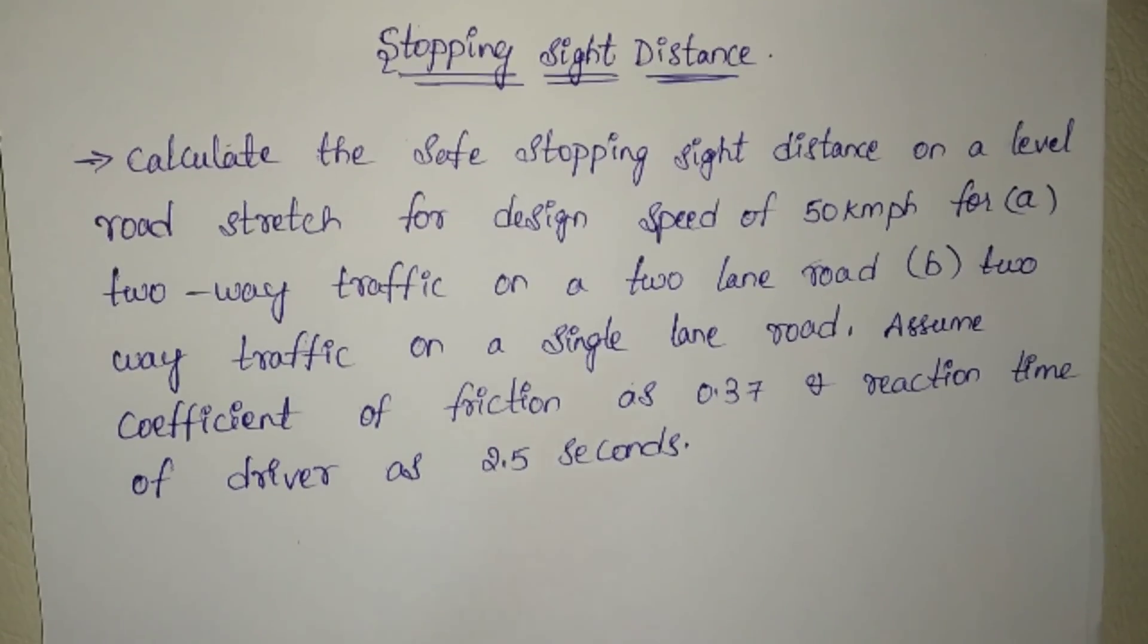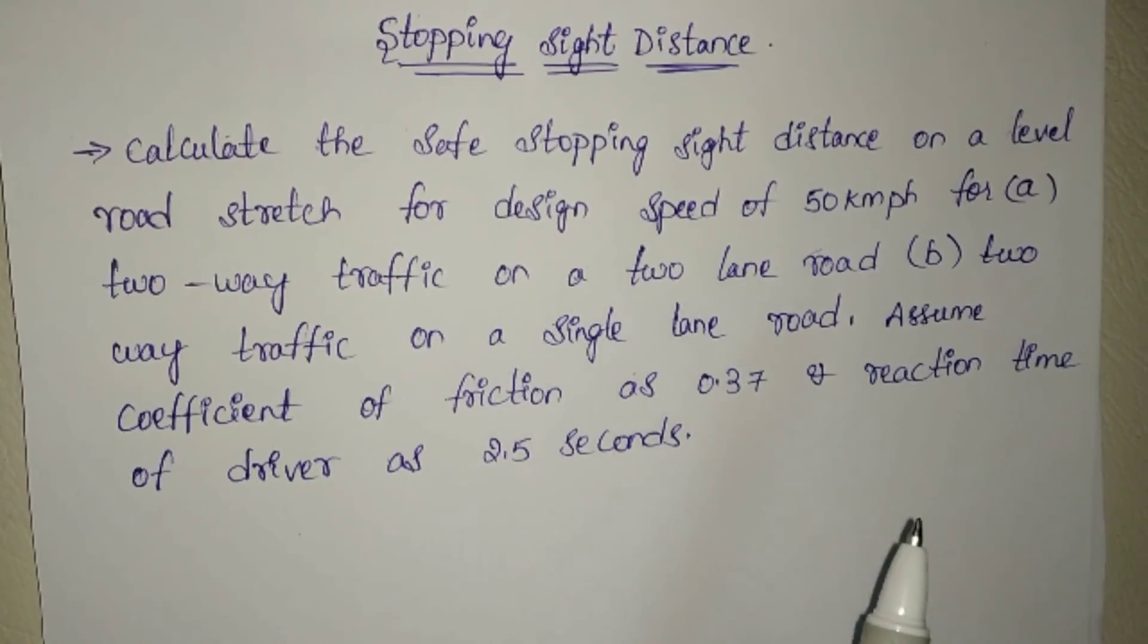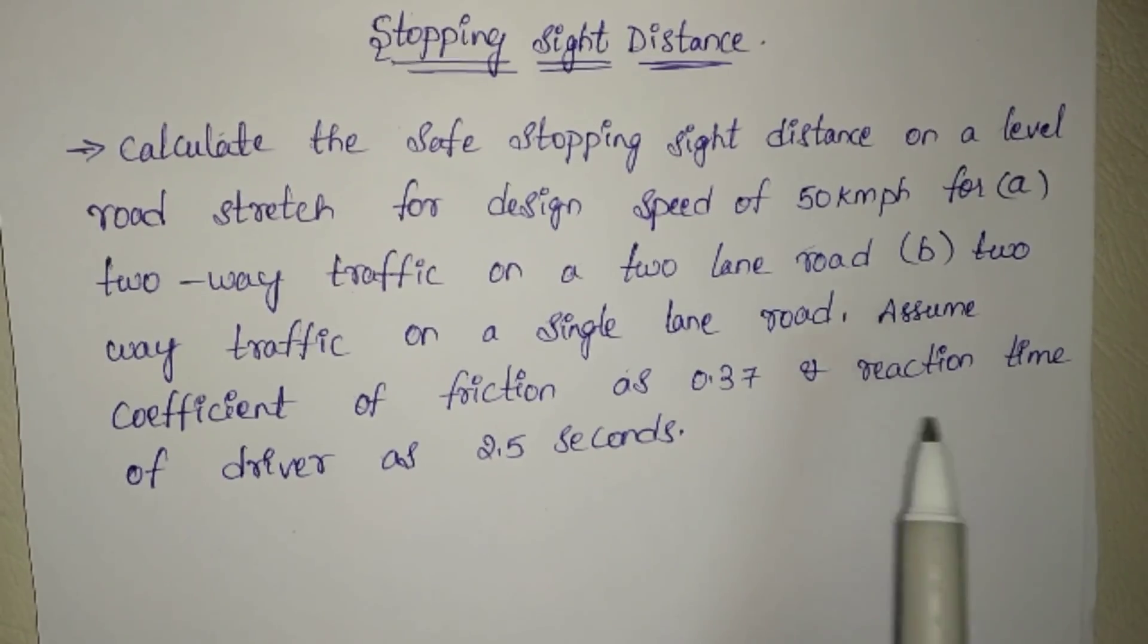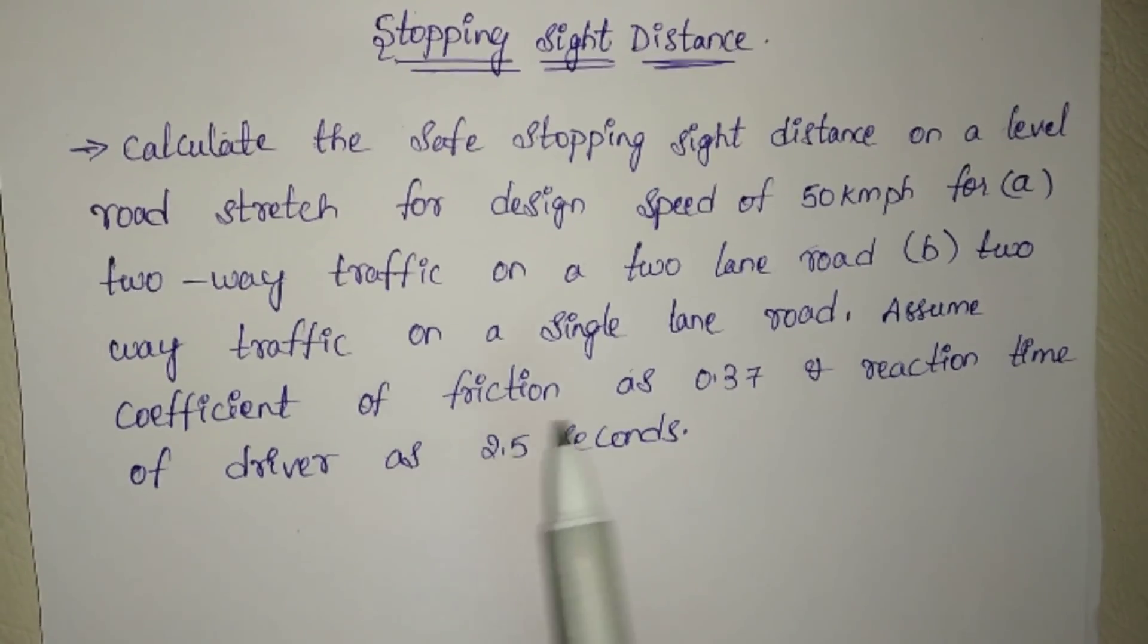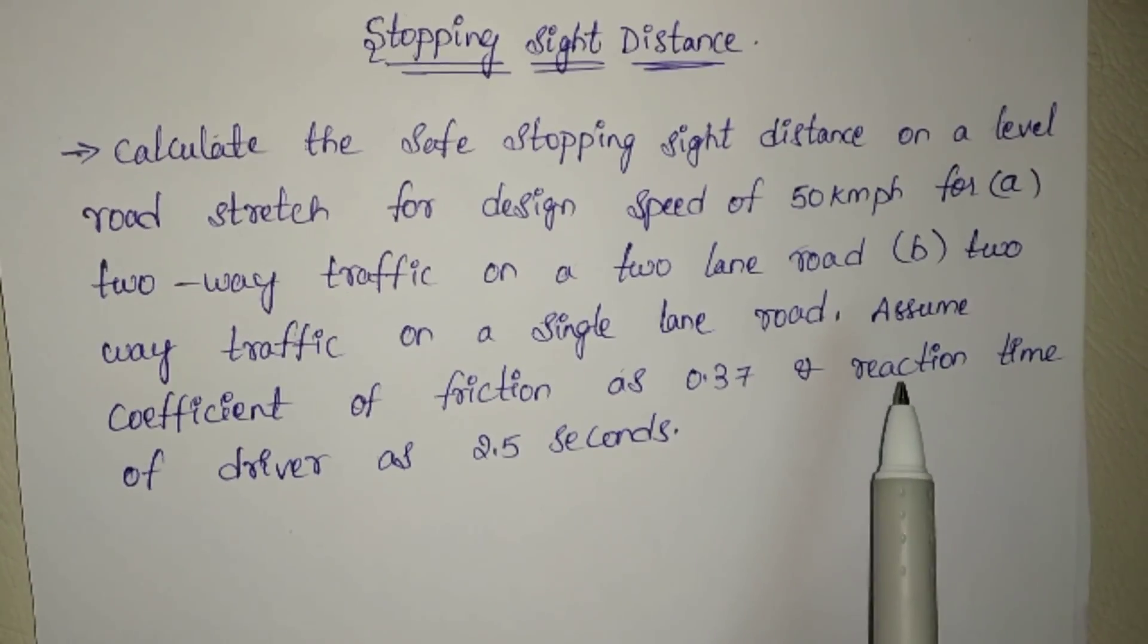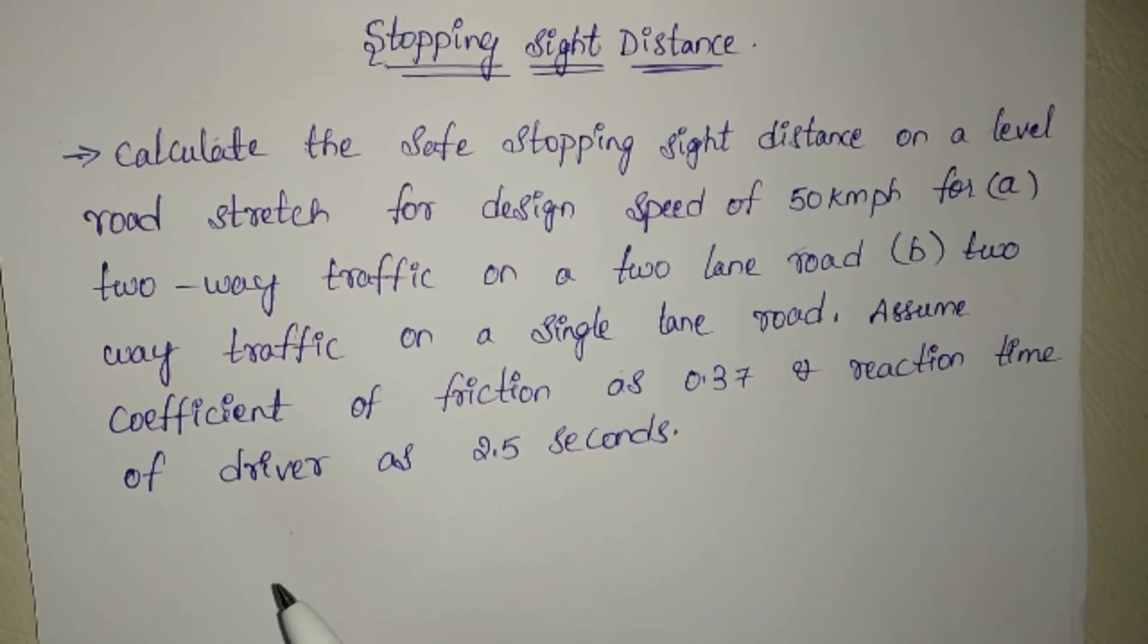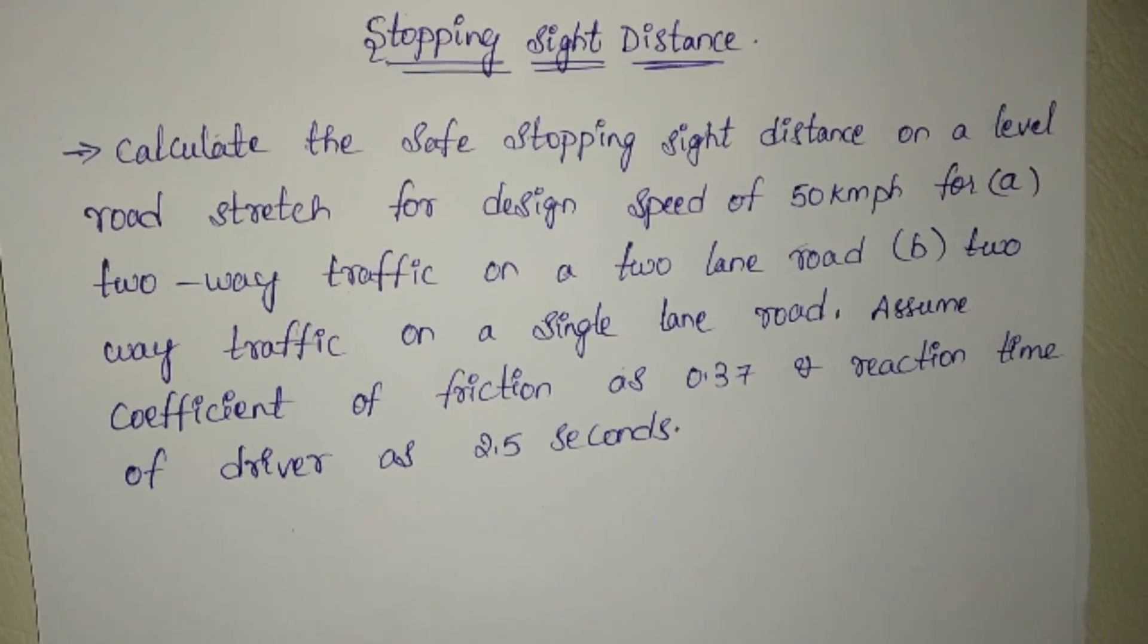The question has two parts: (a) two-way traffic on a two lane road and (b) two-way traffic on a single lane road. Assume coefficient of friction as 0.37 (IRC recommends 0.35 to 0.4) and reaction time of driver as 2.5 seconds.